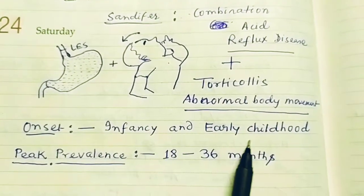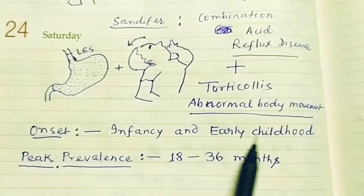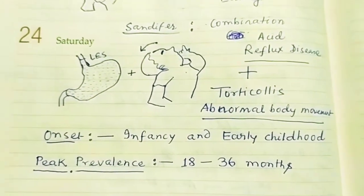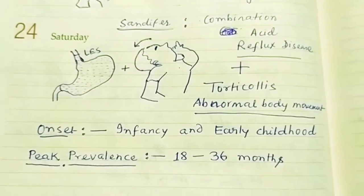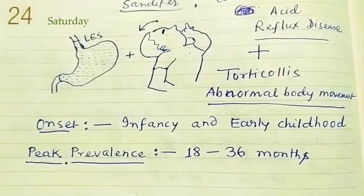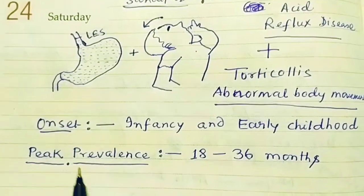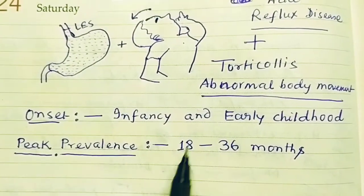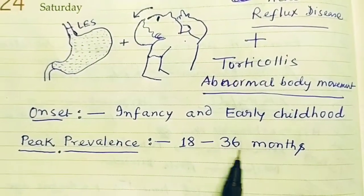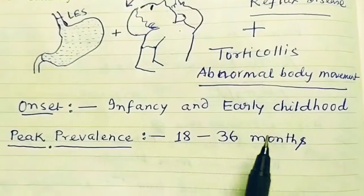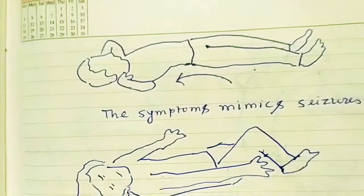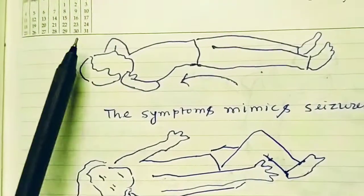The peak prevalence of Sandifer Syndrome is between 18 to 36 months of age.